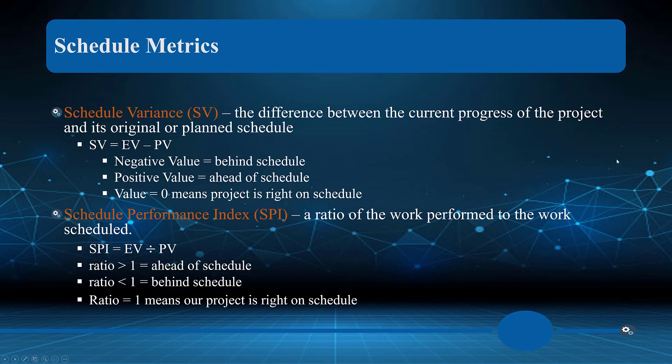I want to caution you on the next two metrics — the schedule variance and schedule performance index. The reason is that what we're measuring here is time, but we're using money to reference or assess time. Be careful with these, although they are valuable.